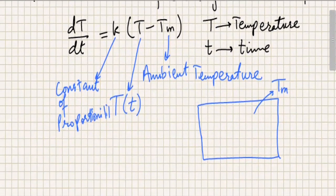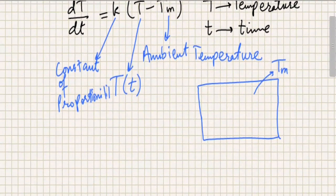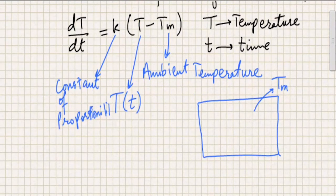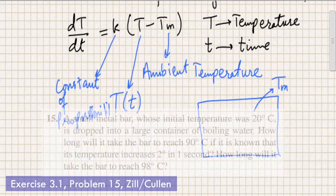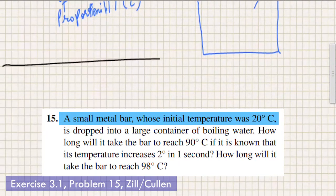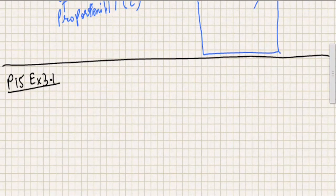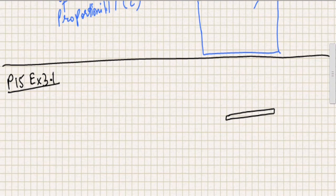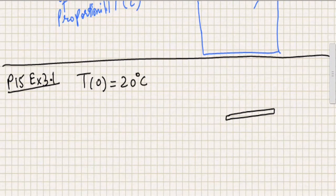As I mentioned in earlier videos, we don't need to go into the laws of physics — these laws are given to us. To understand this law, we can look at a problem from the exercises. The problem states that a small metal bar whose initial temperature was 20 degrees — this is problem number 15 from exercises 3.1. The initial temperature of this metal bar is 20 degrees centigrade, so I'm going to write capital T of 0 equal to 20 degrees centigrade.